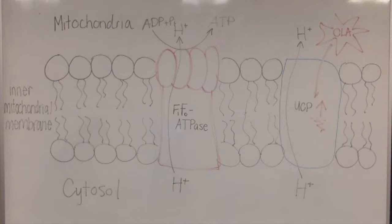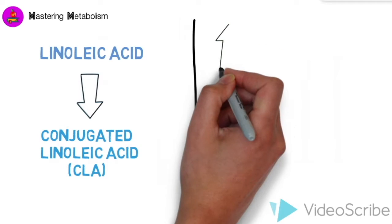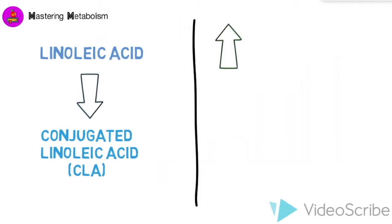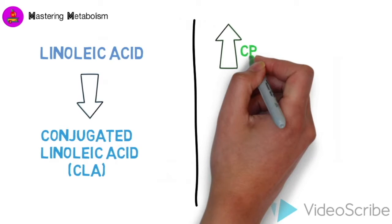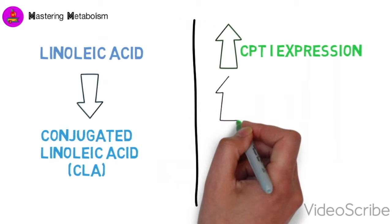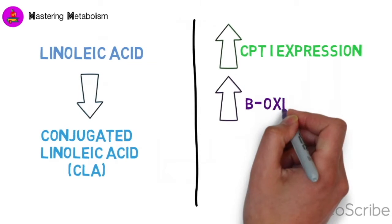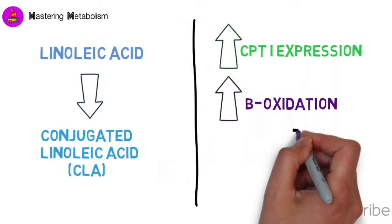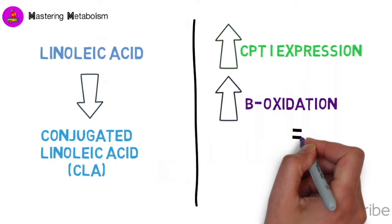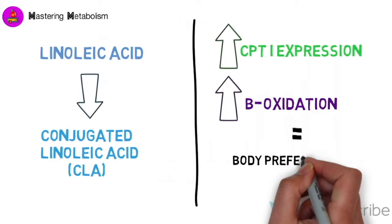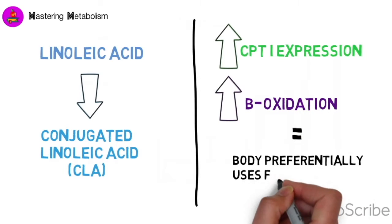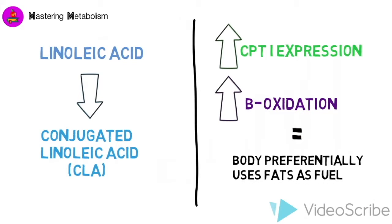CLA has also been found to increase fatty acid beta-oxidation in skeletal muscle by enhancing the activity and expression of carnitine palmitol transferase 1, or CPT1. This is the rate-limiting enzyme in fat breakdown, and its upregulation therefore causes fat to be used preferentially as a fuel source.